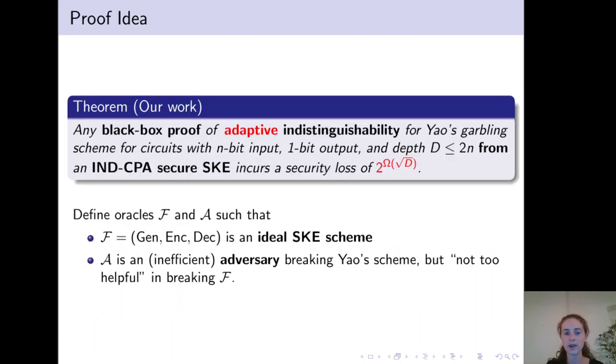To prove our theorem, we define two oracles, F and A. F will be an ideal secret key encryption scheme that in particular is information theoretically IND-CCA secure. And A will be an inefficient adversary that breaks Yao's scheme by brute force breaking the encryption scheme, but still it will not be too helpful in breaking the encryption scheme.